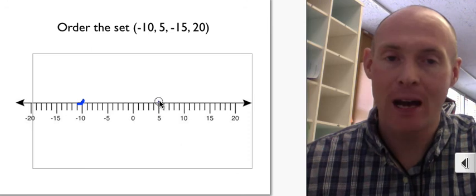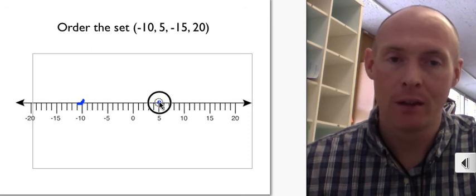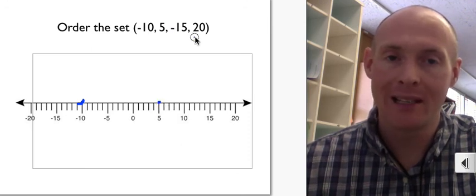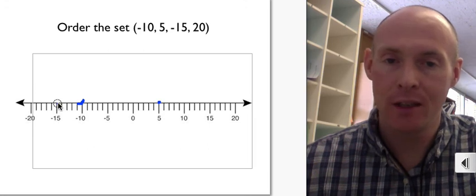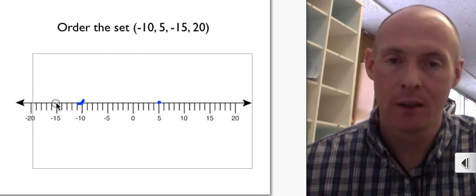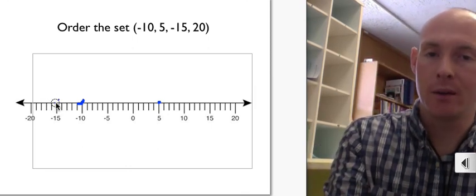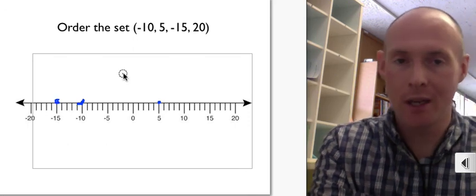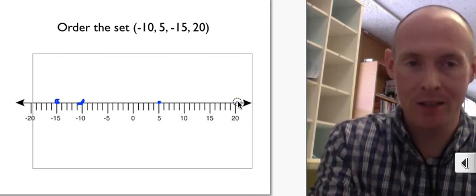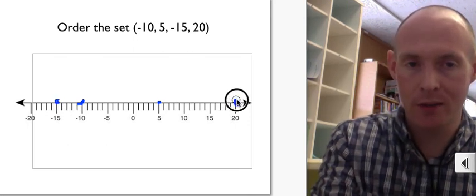Next number is 5. The next number is negative 15. Negative 15 is right about there. And sorry, my pen was not cooperating. And positive 20. Positive 20 is right there.